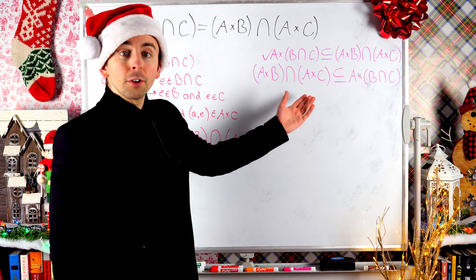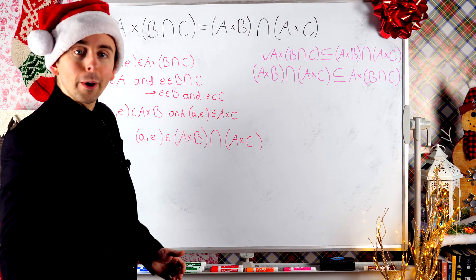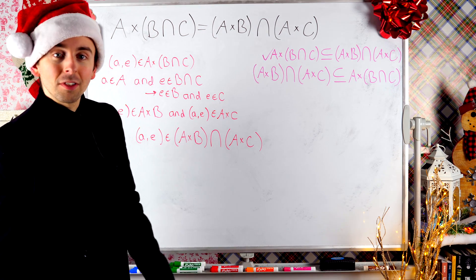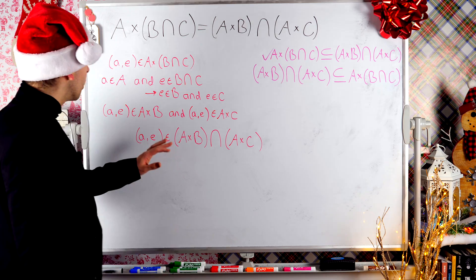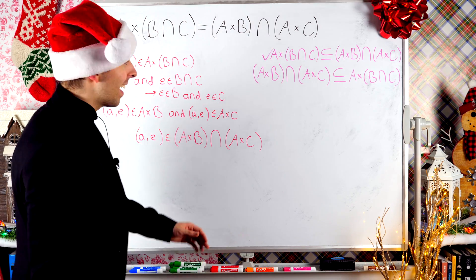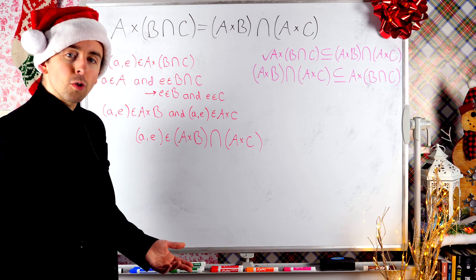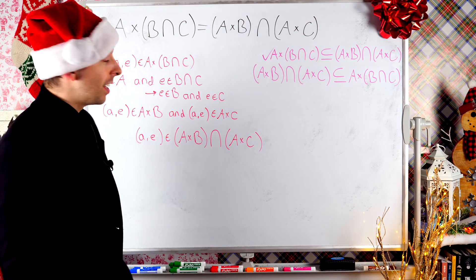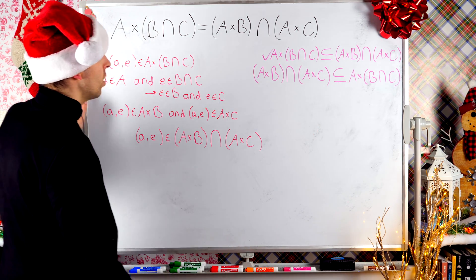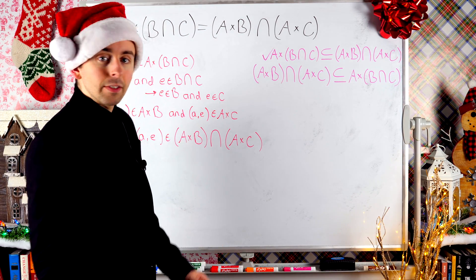To prove the other direction, it's actually just all of these statements but backwards. As long as you understood these statements one way, hopefully you can understand it the other way too. I'll give you a second to pause the video and try to prove this second direction on your own — it's just these steps in reverse. We would of course begin the proof of this subset relationship by taking an arbitrary element from the set on the left.